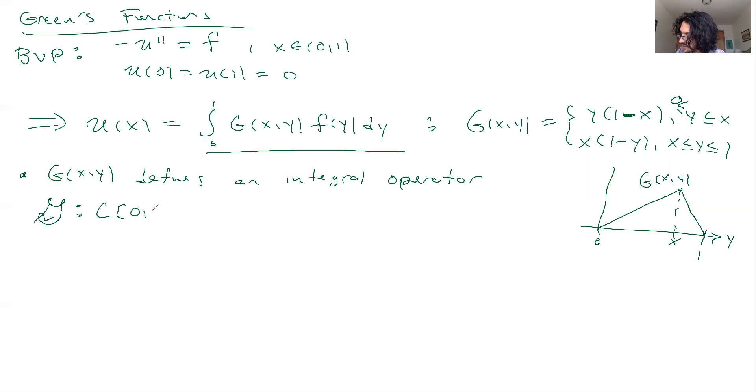It takes continuous functions defined on [0,1] and maps them to the space X, which would be comprised of functions that are continuous and they also satisfy these boundary conditions. Because we make sure of it, it's tacked down at the left and right-hand sides to 0.